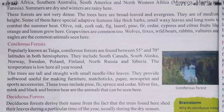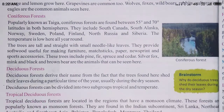Next is coniferous forest, properly known as taiga. Coniferous forests are found between 55 degrees and 77 degrees latitude in both hemispheres. They include south Canada, south Alaska, Norway, Siberia, and other areas mentioned here. The trees are tall and straight with small needle-like leaves. These are the forests we discussed today; we will discuss the next topic in the next video.